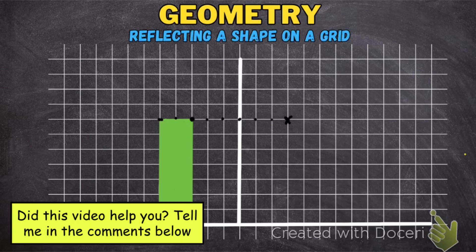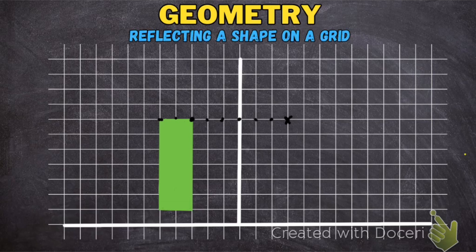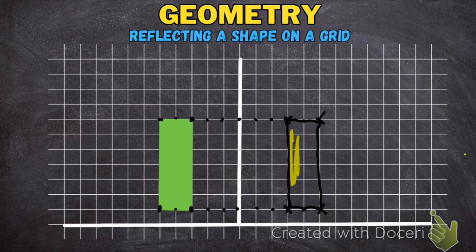I'm going to pick this corner here — one, two, three, four, five; one, two, three, four, five. Then this corner — one, two, three; one, two, three. And this corner — one, two, three, four, five; one, two, three, four, five. Then join the crosses up and color it in. That is where the new shape is after it's been reflected.